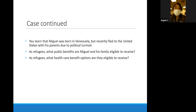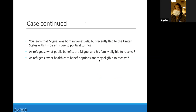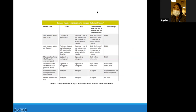Case continued: you learned that Miguel was born in Venezuela and recently came to the United States. As a refugee, what public health or healthcare benefits are available? A lot of the modules provide up-to-date references for clinicians that are easy to access and use, because this information is just not readily available for many clinicians.